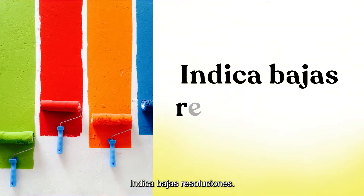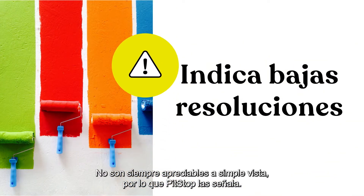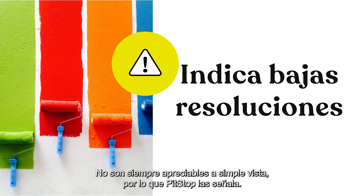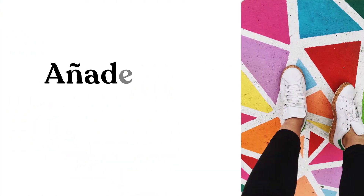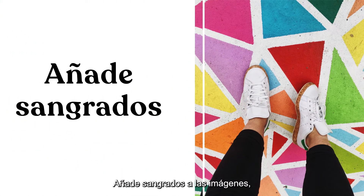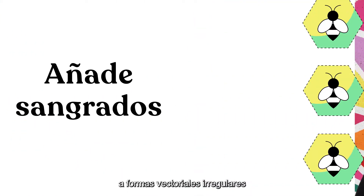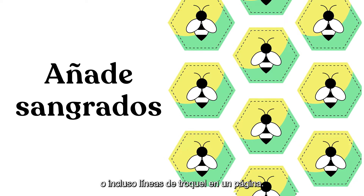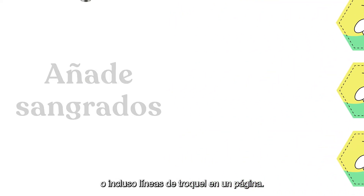It flags low resolution — you can't always catch it by eye, so HitStop does it for you. Adds bleeds to images, to irregular vector shapes, or even die lines within a page.